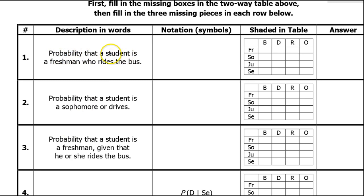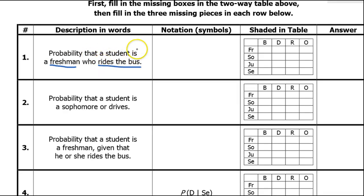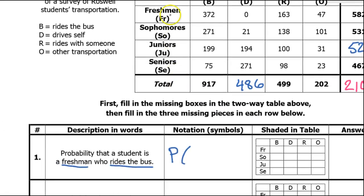Problem number one: what's the probability that a student is a freshman who rides the bus? I don't see the word 'and' or the word 'or,' but if we're talking about someone who is a freshman who is riding the bus, both of those things are happening at the same time. So it's really implied that this is going to be an AND problem — the probability that a person is a freshman (FR) and at the same time they ride the bus (B).